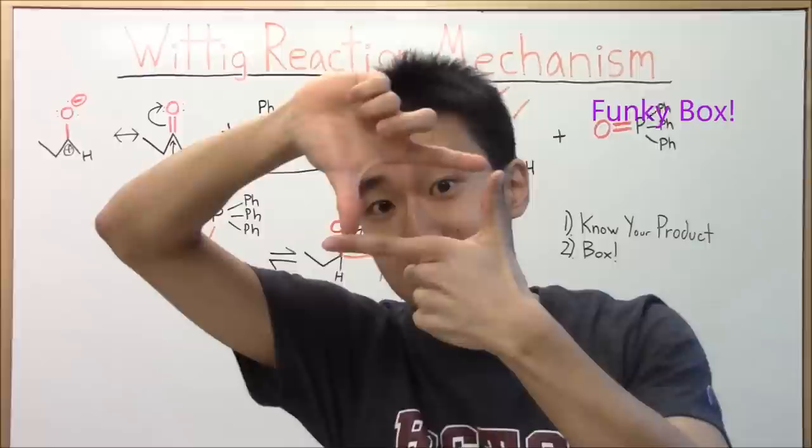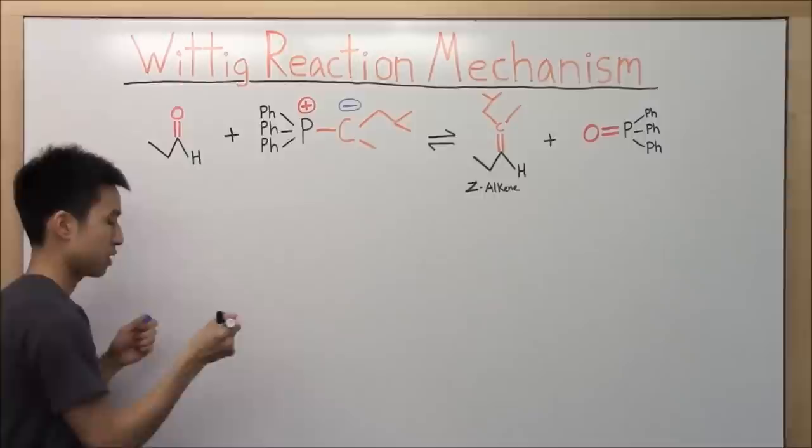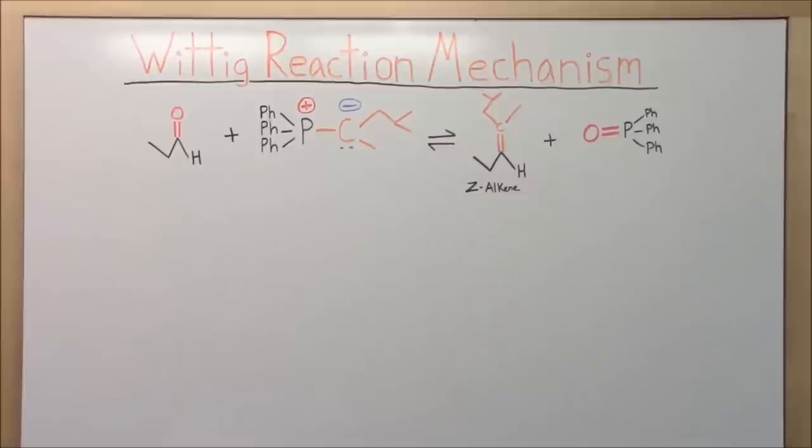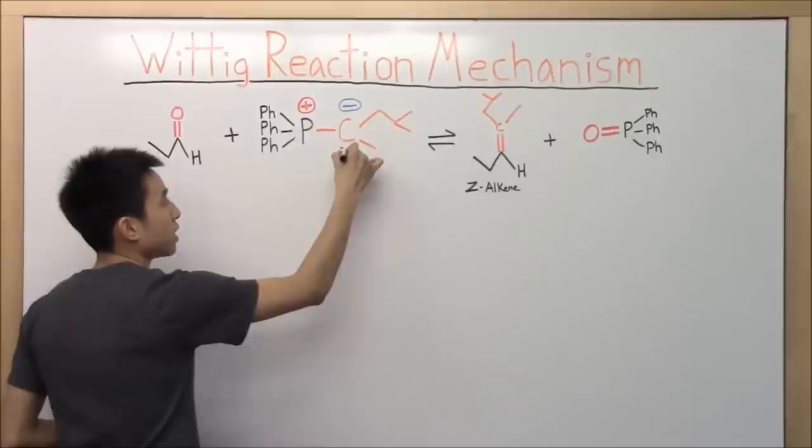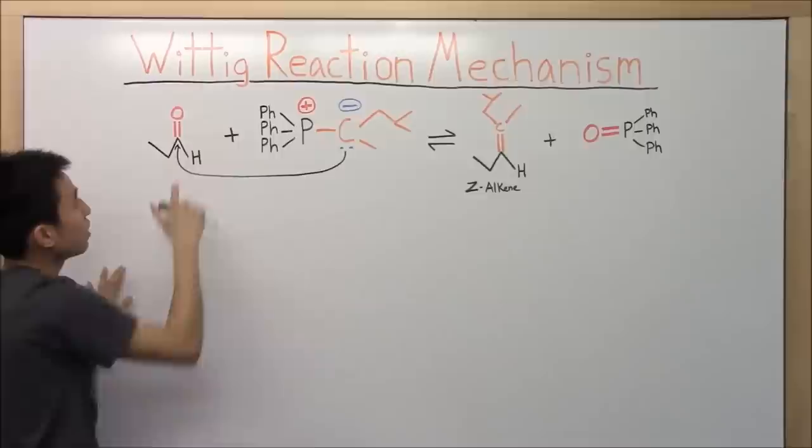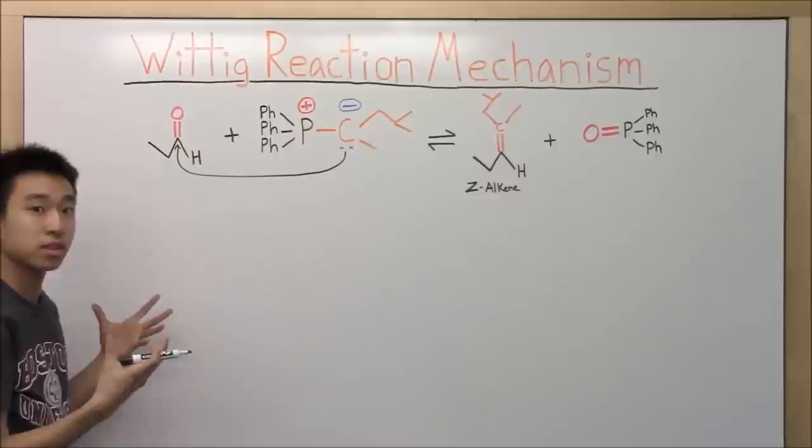All right, so for this reaction, how do you guys want to start it? Where should we do our arrows? So you need to draw the lone pair of electrons that are on your carbon of your ilid. And then that's where the reaction's going to start. So the electrons on your ilid are going to attack the electron-deficient carbon that's right over here.